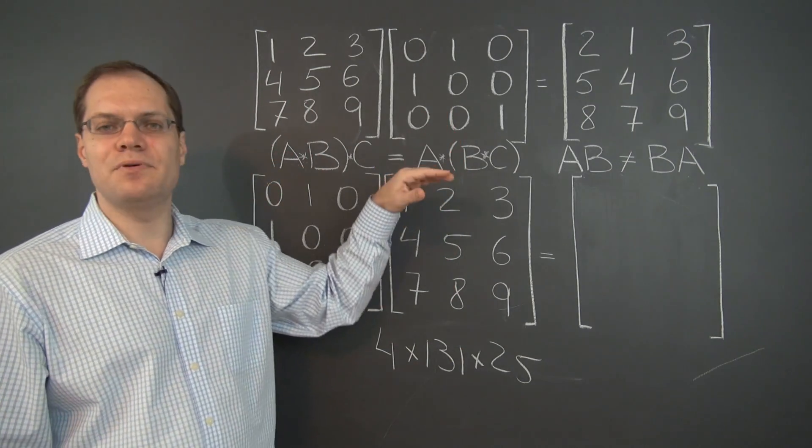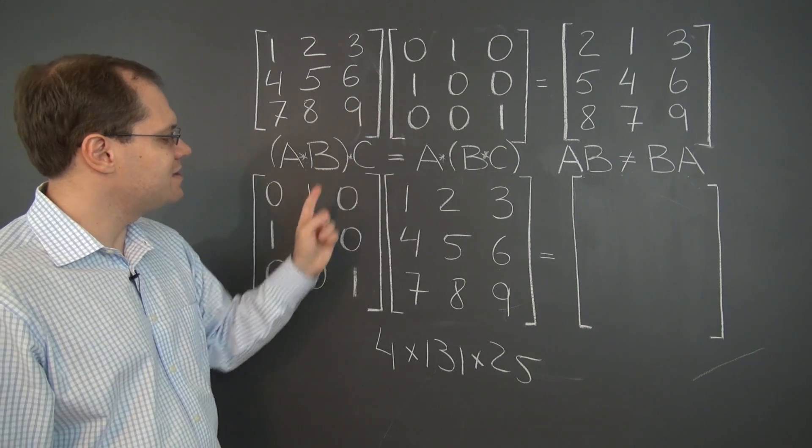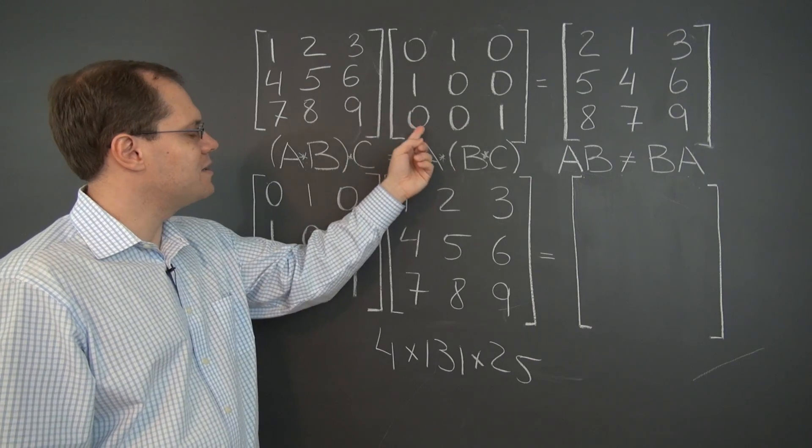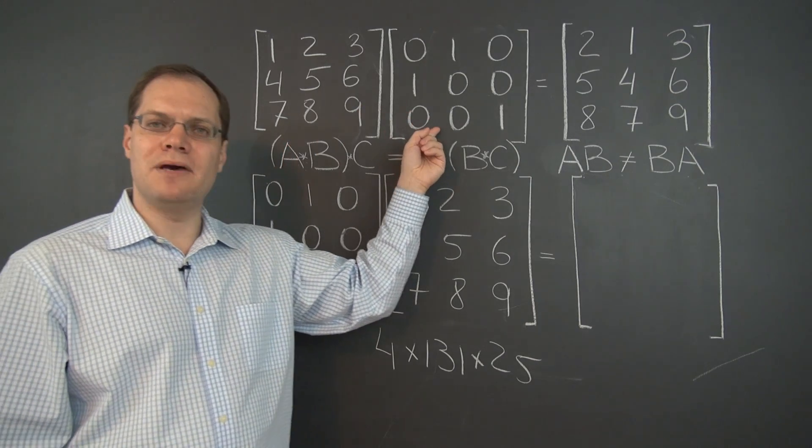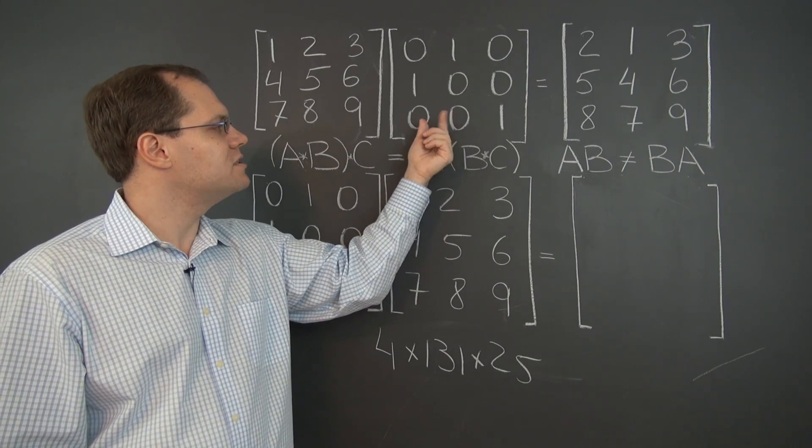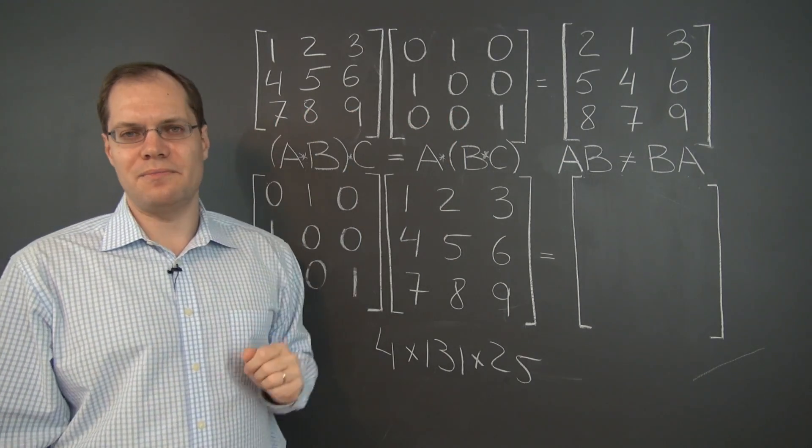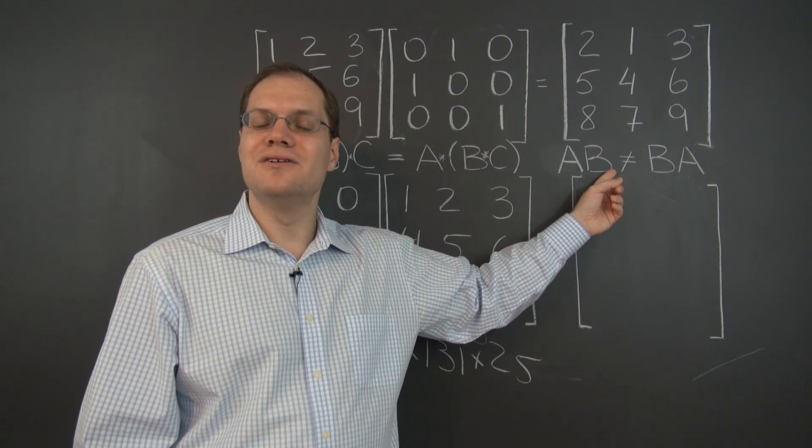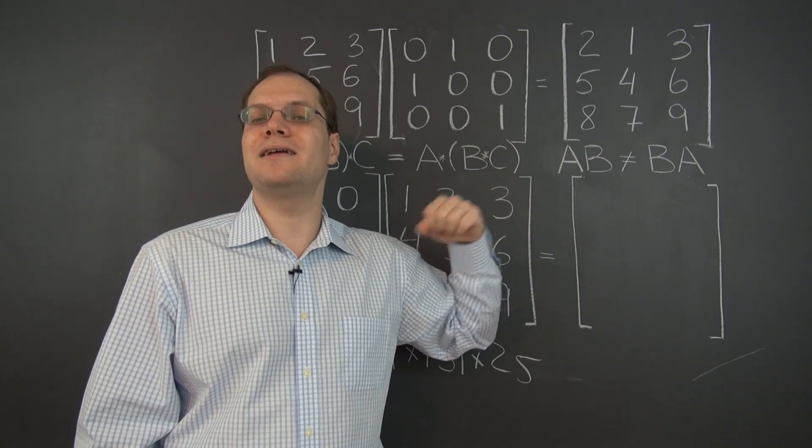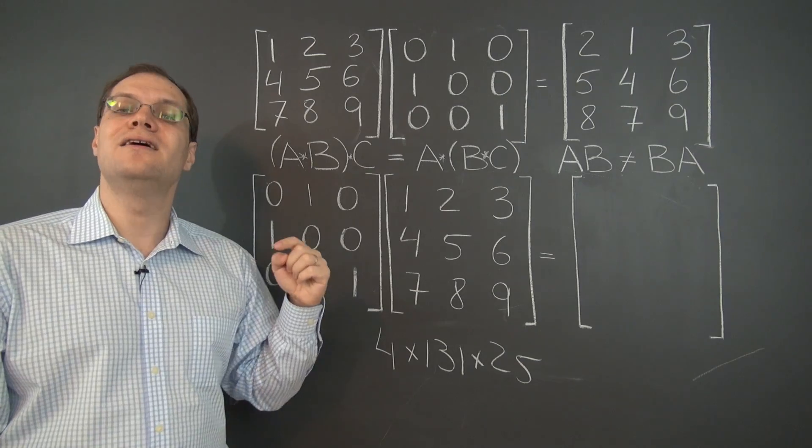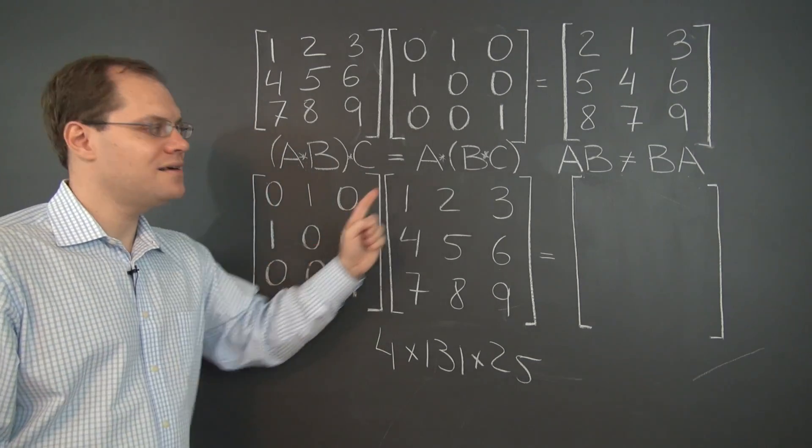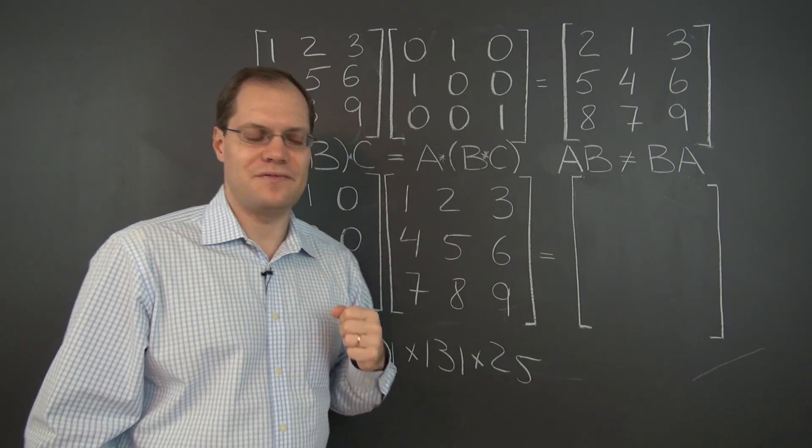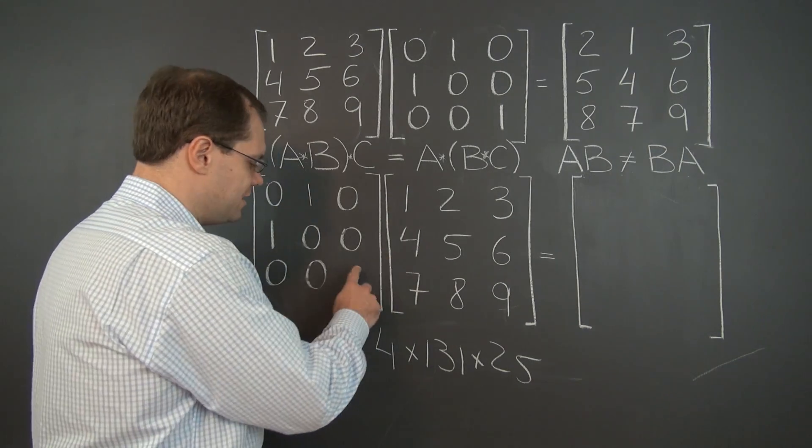Here on the board, we have an example from a previous video, where we had the same two matrices but multiplied in opposite order. When we multiply them in this order, we interpreted this matrix as an action: switching the first two columns of the matrix on the left. Let's try to see whether commutativity holds by an experiment. Let's multiply these matrices in the opposite order and see if we get the same result. We won't. It will fail in a very interesting way.